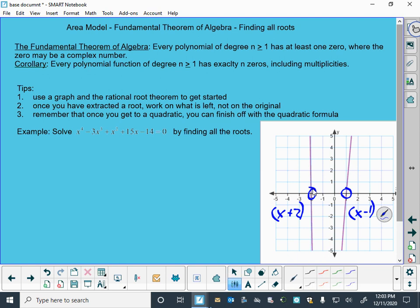So we're going to try to solve this equation. It may be difficult to see, but it says x to the 4th minus 3x cubed plus x squared plus 15x minus 14 equals 0. And we're going to try to solve this by breaking this apart into four different pieces if we can, because it is degree 4.